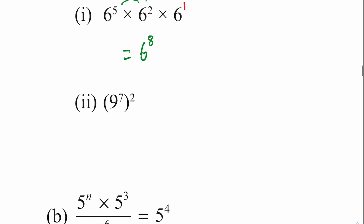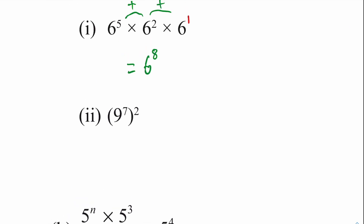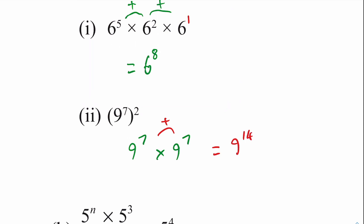Part b — this is something a bit different that we haven't seen before. Instead of having two bases that are the same being multiplied together, this time we've got one base and the entire thing is being squared. It might help to rewrite this question: we've got 9 to the power of 7, and all 'squared' means is everything inside the bracket is being multiplied by itself — so multiplied by 9 to the 7. From here we can see all we have to do is add the two powers, giving us 9 to the power of 14.